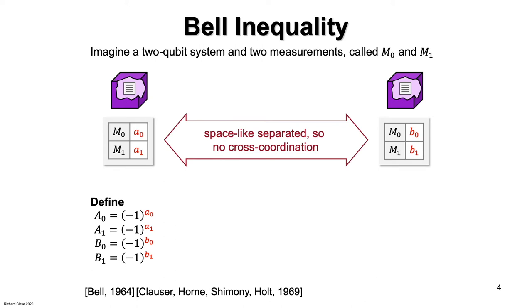Zero gets converted to plus one and one gets converted to minus one. And we use uppercase letters for the converted bits. So each uppercase letter is either plus one or minus one.